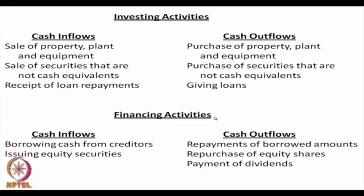Apart from that, there are also financing activities. Cash inflows from financing include borrowing cash from creditors and issuing equity shares. Cash outflows from financing include repayment of borrowed amounts, repurchase of equity shares, and payment of dividends. So broadly, cash inflows and outflows occur under 3 headings: operating activities, investing activities, and financing activities.